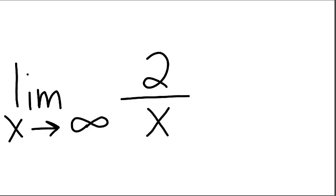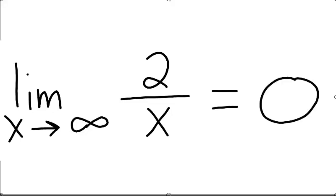Another example of a determinate form is 1 over infinity, which we know always gives the limit value of 0.